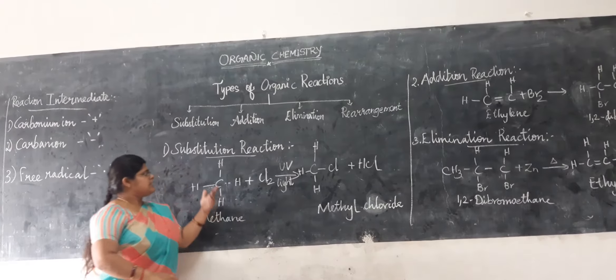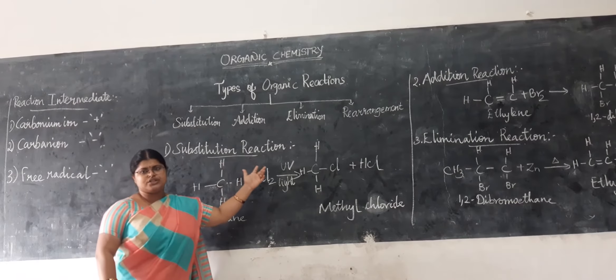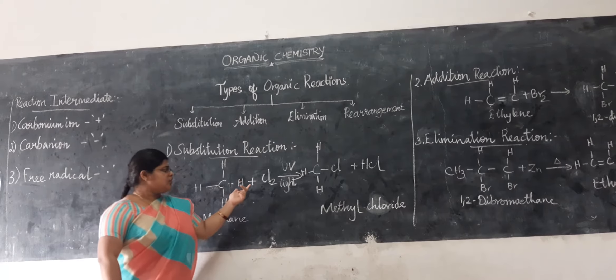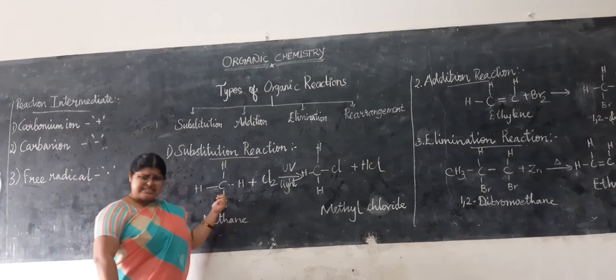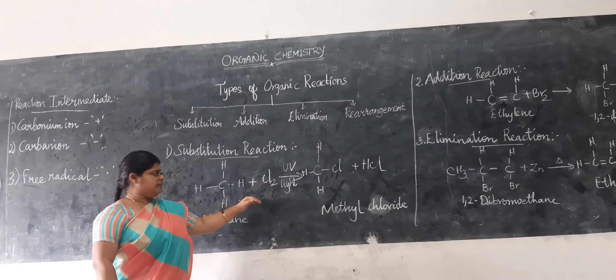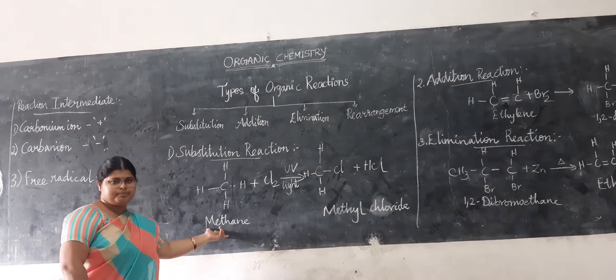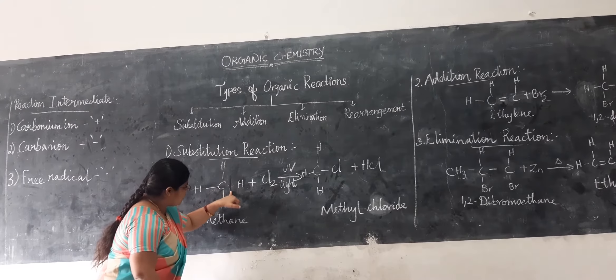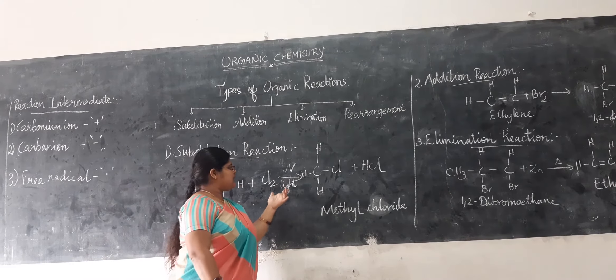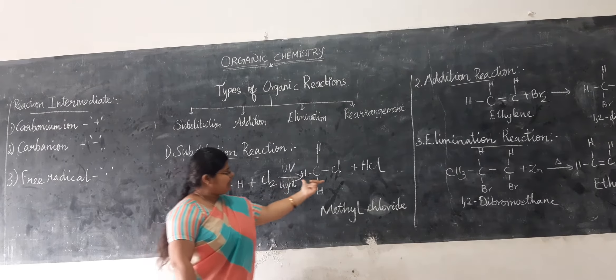First is the substitution reaction. In a substitution reaction, an atom or molecule attached to a substrate is cleaved or broken and replaced by another atom or molecule. For example, when we take methane, we eliminate one hydrogen atom and replace it with one chlorine atom in the presence of UV light. Finally, we get the product methyl chloride.